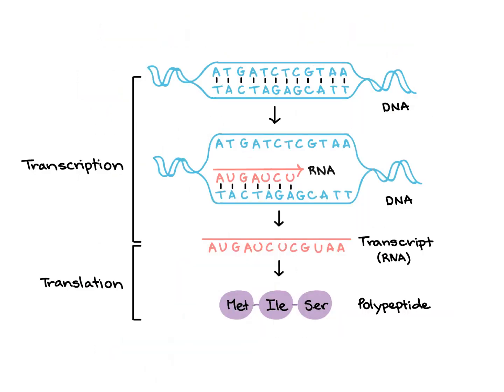In transcription, information is copied onto RNA using complementary base pairing: adenine binds with thymine and guanine binds with cytosine. In RNA, since there is no thymine, adenine binds with uracil instead. By copying this information, a complementary RNA — the transcript or mRNA — is formed, which is then used for polypeptide or protein synthesis in the translation process.